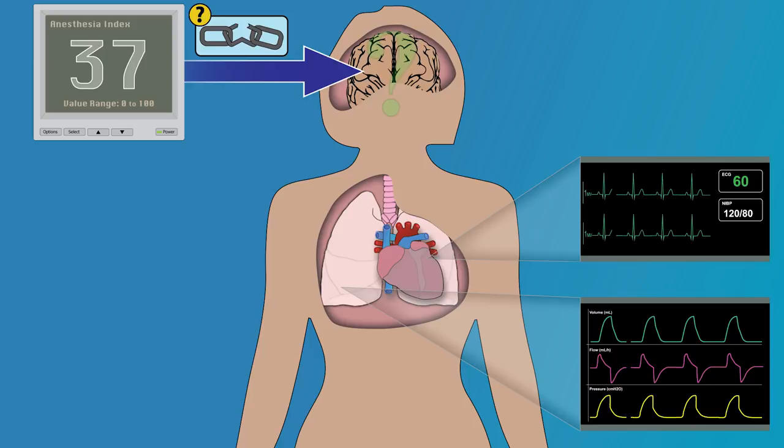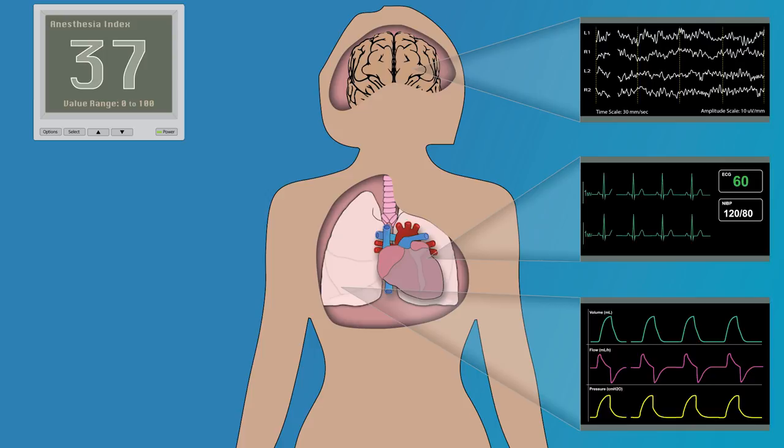We now have a much better understanding of the science and neurological underpinnings of anesthesia. As such, why should our current brain monitoring approaches remain mired in the past? We have a very rich signal in the EEG waveform that can provide us with valuable information about the state of the brain. Why lose all this useful information by only using an index value?